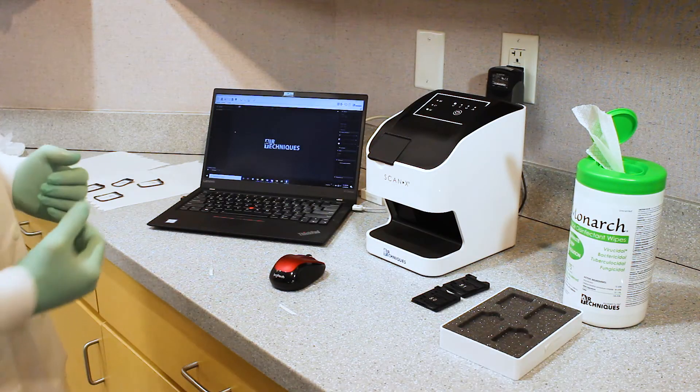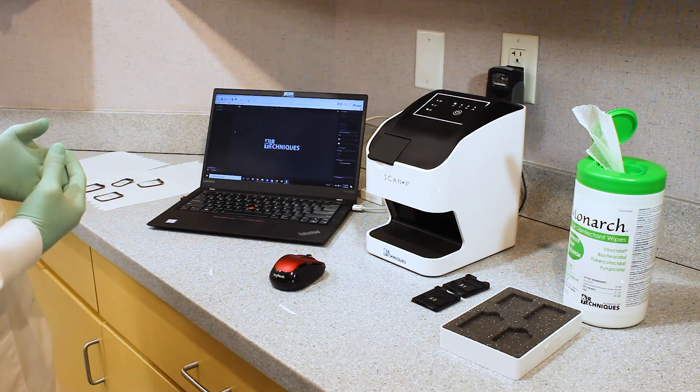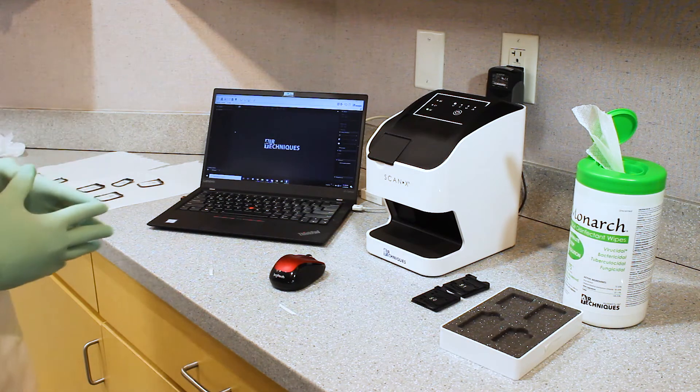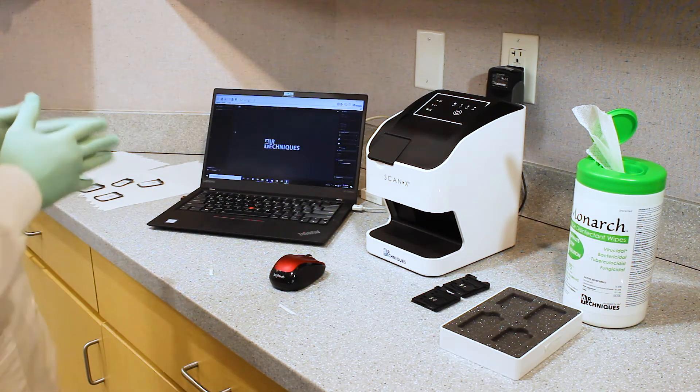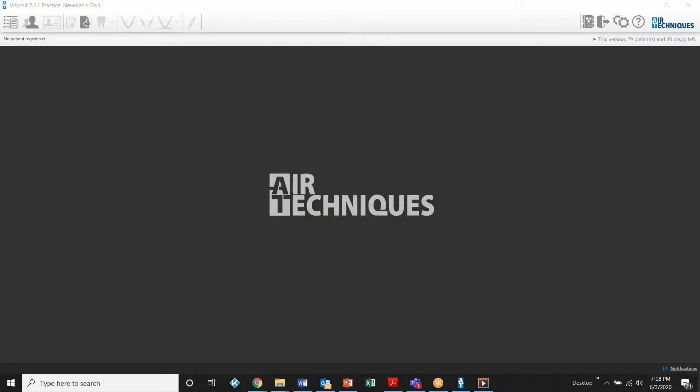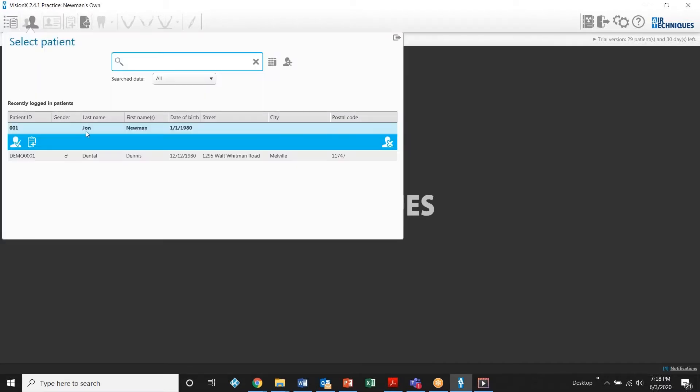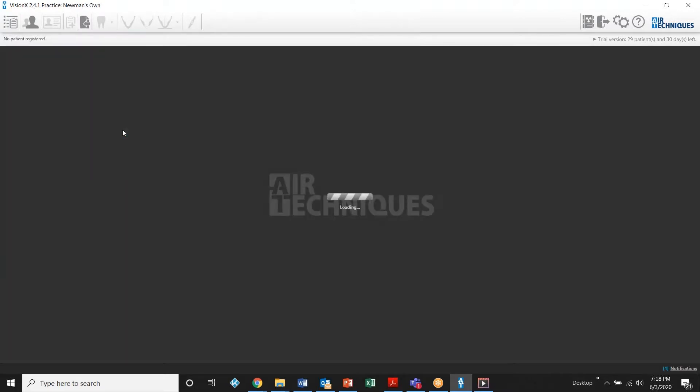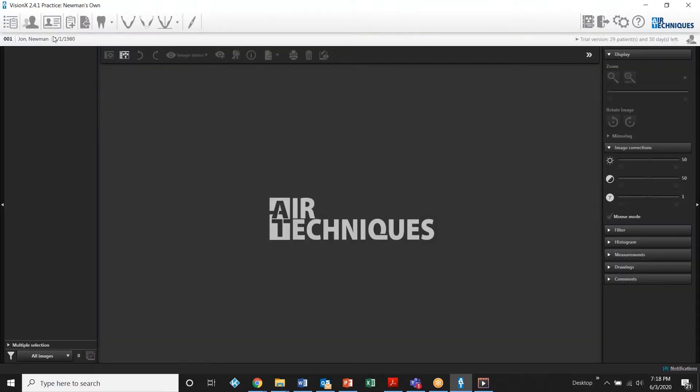The next step is going to be activating the ScanX. So we would be doing that with our imaging software called VisionX. And I'm simply going to choose my patient from the patient list. I'm going to choose myself here, John Newman. Once my patient is selected, we have the name selected up over here. This is noting which patient we are about to be acquiring into.